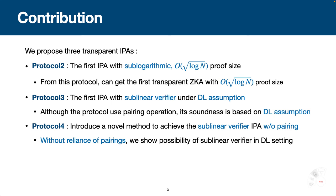Second, named Protocol 3, the first Inner Product Argument with sub-linear verifier under the Discrete Logarithm assumption. Although the protocol uses pairing operations, its soundness is based on the standard Discrete Logarithm assumption. Last, named Protocol 4, we introduce a novel method to achieve a sub-linear verifier in the protocol argument with a pairing operation. With a variance of pairings, we show the possibility of a sub-linear verifier in the Discrete Logarithm setting.